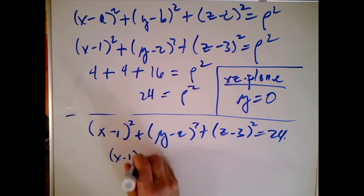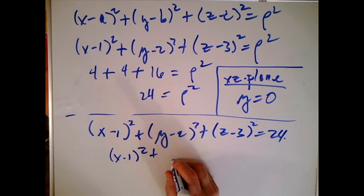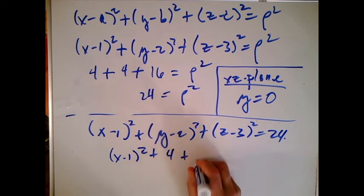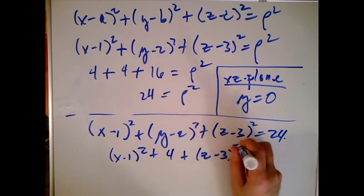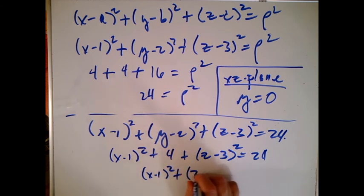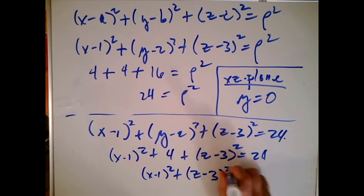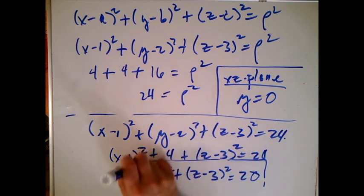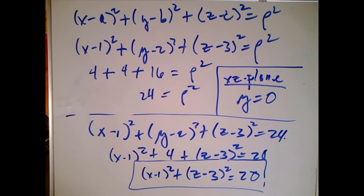I'm going to get X minus 1 squared plus minus 2 squared. That's plus 4 plus Z minus 3 squared equals 24. Let's get the 4 on the other side. And I'm going to get X minus 1 squared plus Z minus 3 squared equals 20. So not only does it hit the XZ plane, it hits the XZ plane in an infinite number of points exactly that circle.